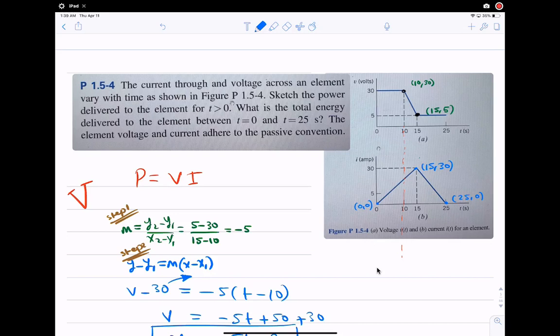Hello everyone, welcome to this session. I'm going to take an example on graphing and sketching. I have here two graphs, the voltage graph and the current graph. The question says the current through and voltage across an element vary with time as shown. So it's variable. The voltage from time 0 to 10 was a straight line and then descends, and then a straight line. The current is going up and then down from 0 to 15 and then from 15 to 25.